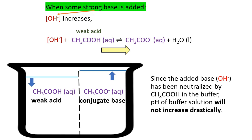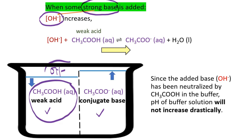When strong base is added, a strong base dissociates 100% to produce a high amount of hydroxide ions. When the added hydroxide ions are not treated, they will increase the pH of any solution. But because an acidic buffer contains weak acid and conjugate base, the weak acid reacts with all the hydroxide ions, removing them from the solution, so the pH of the buffer solution does not increase drastically.